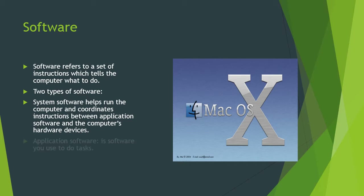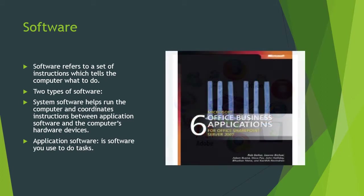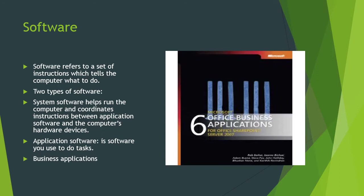System software usually includes the operating system and the utility systems. Application software is software you use to do daily tasks, such as Outlook Express, Microsoft Windows, and Adobe. All of these are application softwares, and you can use them for sending emails, paying taxes, presenting online slides, editing photos, even to take an online course. Business applications may do payroll or letters and letterheads, but these are still software that you put on your computer.